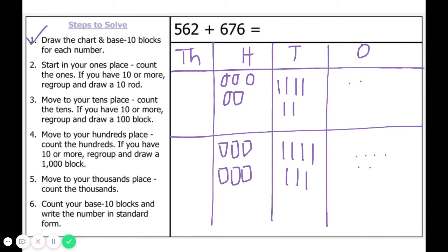Step two: start in your ones place. Count the ones — if you have ten or more, regroup and draw a ten rod. We count and find eight ones, so we do not have ten or more. We are not going to regroup. We are going to draw our place value lines to help us organize our numbers. In our ones place we have seven, and we will write that in our answer.